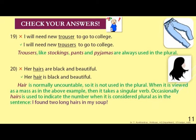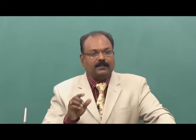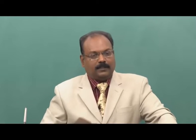The last example: 'Hairs are black and beautiful' is wrong usage. The correct form is 'Hair is black and beautiful.' Hair is normally uncountable and not used in the plural. When viewed as a mass, it takes a singular verb. Occasionally, 'hairs' is used to indicate a countable number, as in 'I found two long hairs in my soup.' But generally, hair is used to indicate the mass — so you go for a 'hair cut', not a 'hairs cut.'